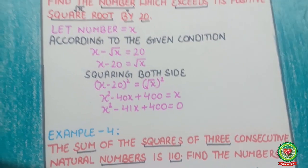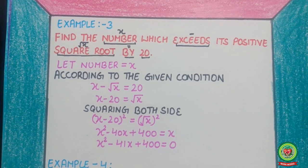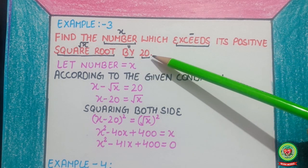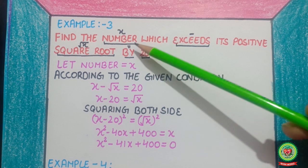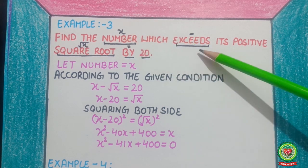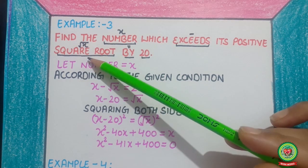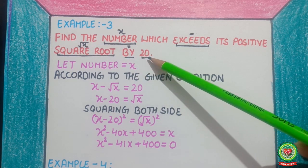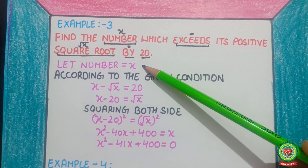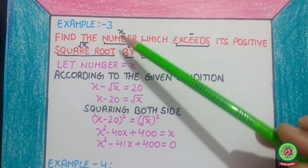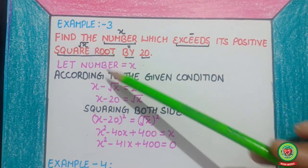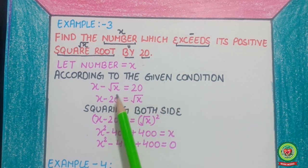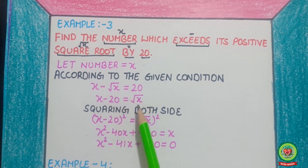Now, example number 3: find the number which exceeds its positive square root by 20. Let the number equal x. 'Exceeds' means minus, so x minus the square root of x equals 20. According to the given condition, x minus √x equals 20. To solve this, we shift the square root term to the right-hand side.